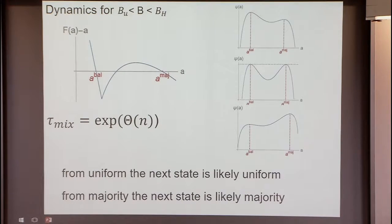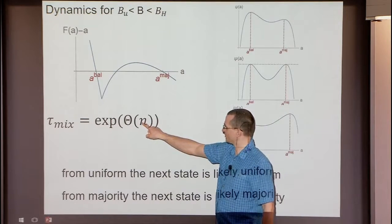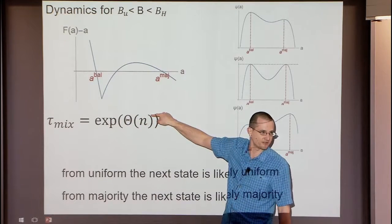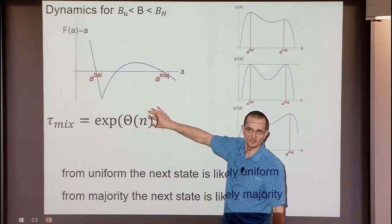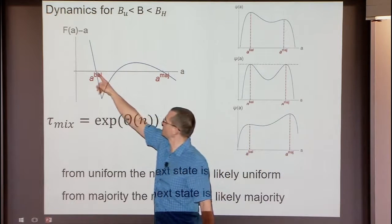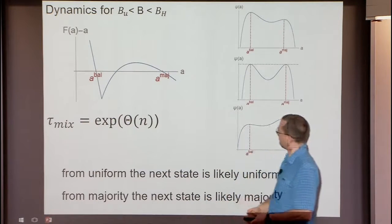Understanding the dynamics between the fixed points is actually somewhat easy — you just need to show the mixing time is large. The argument is that if you are in a configuration around one fixed point you stay there; if you are around the other fixed point you stay there. Though we can't quite prove exponential mixing time — what we have is n to the theta-of-one — the idea is clear.